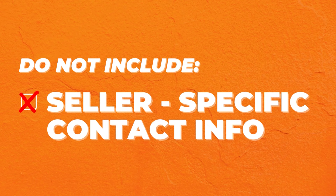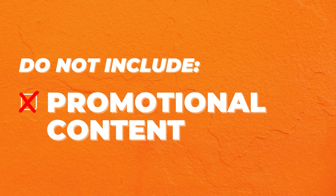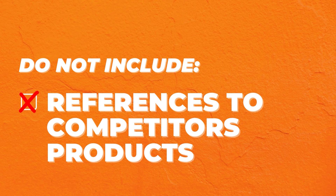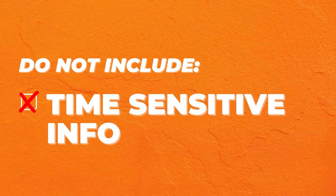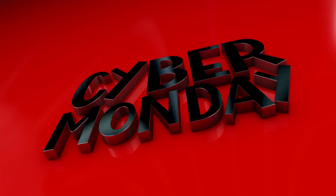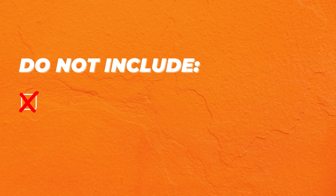There are also things you should not include in your A-plus content: any type of seller-specific contact information, any promotional content, references to your own social media platforms or website. Also, don't refer to any competitors or third-party products, no shipping-related information, no inappropriate content, and no time-sensitive information. So if you're having a sale or anything with a deadline, that is not allowed. Also, avoid mentioning any sort of guarantees, and no unauthorized use of Amazon's logo or trademarks.